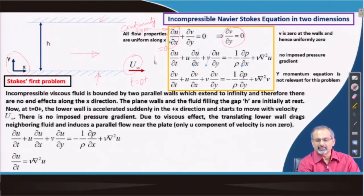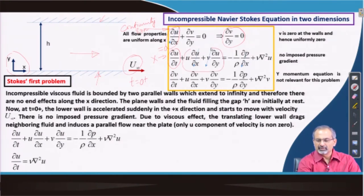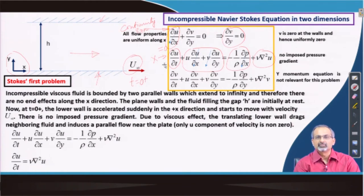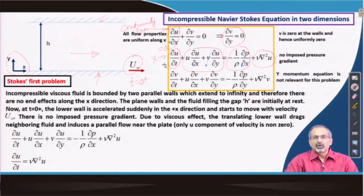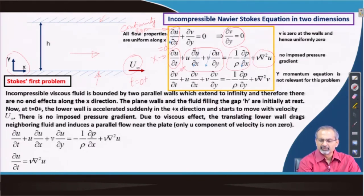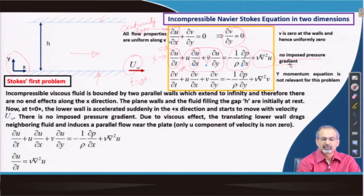With v equal to 0, we go to the x-momentum equation. There is a time derivative of u, convective derivatives, a pressure gradient, and a viscous term on the right-hand side. The time derivative is non-zero because as one wall starts moving, the u component of velocity changes with time, most strongly initially and then weakening. The convective term u del u / del x vanishes since properties do not change along x. The v term is 0, so convective derivatives vanish. No pressure gradient is imposed, so the pressure term also goes to 0.